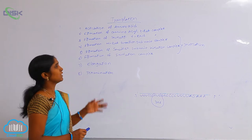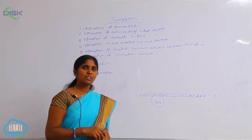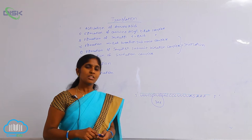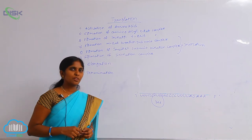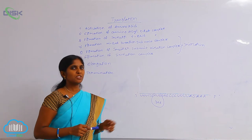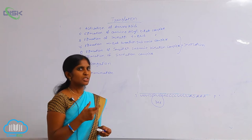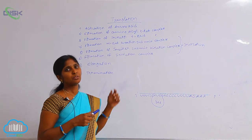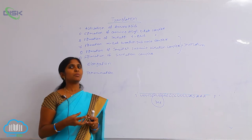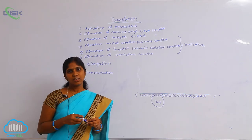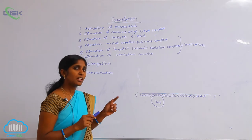Different steps are involved in translation. The first step is activation of amino acids. We already studied the different types of amino acids in previous classes — 20 types of amino acids are present. In translation, the procedure involves polymerization of amino acids to produce protein. For their activation, energy is needed in the form of ATP.